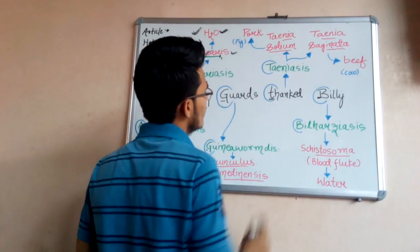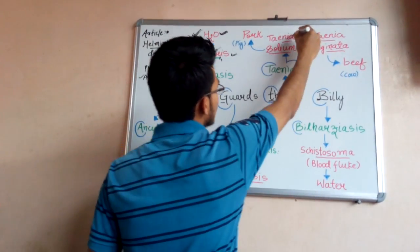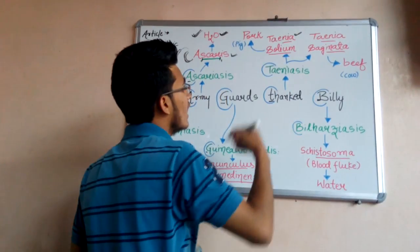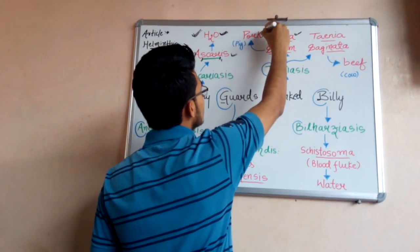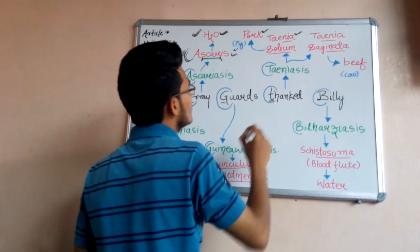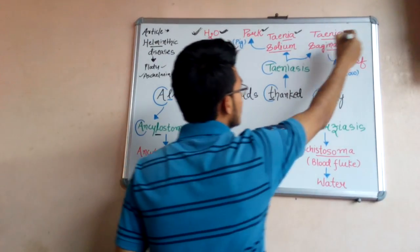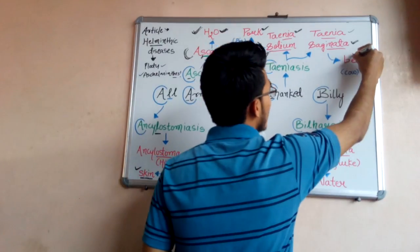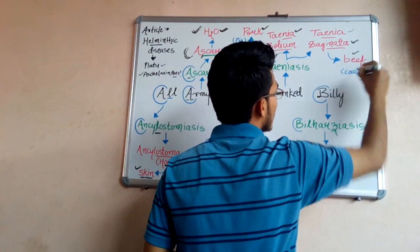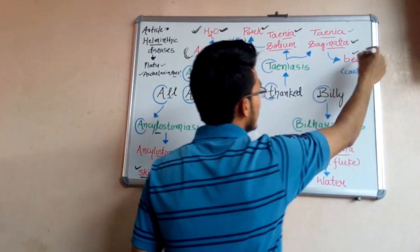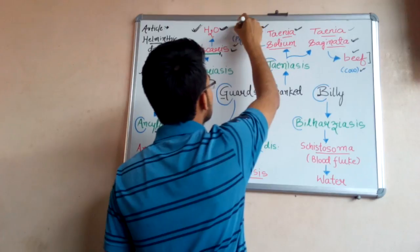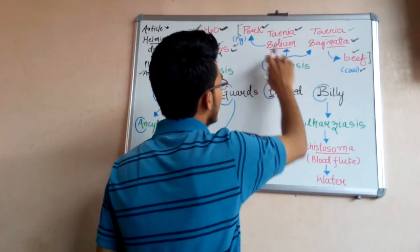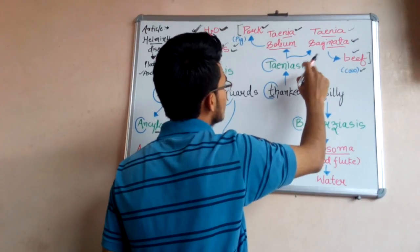Thank — that is 'T' — stands for Taeniasis, which is caused by Taenia solium. Taenia solium enters our body via pork, which is the meat of pig, and also via beef, which is the meat of cow. So you have to memorize these two things: pork and beef, respectively.